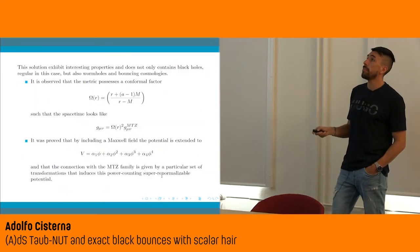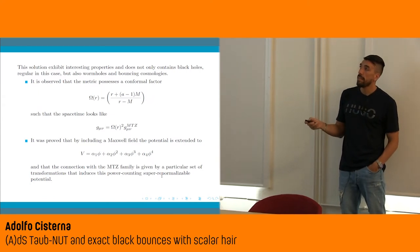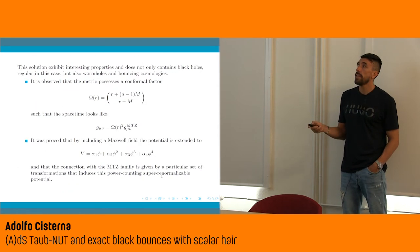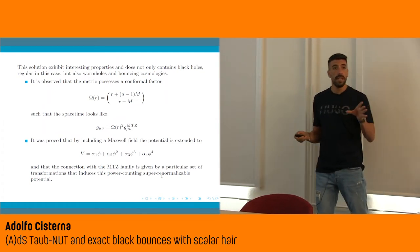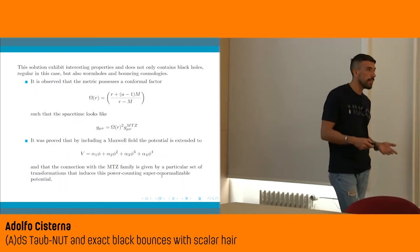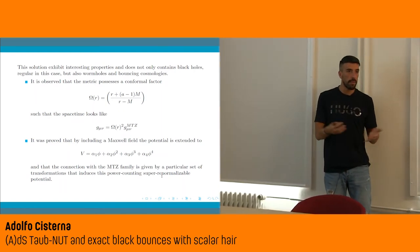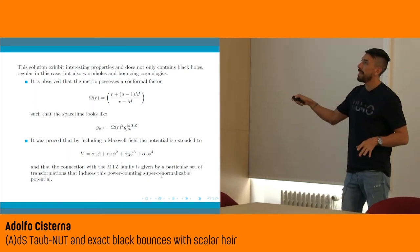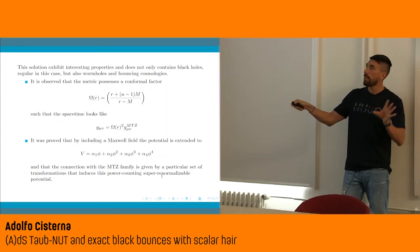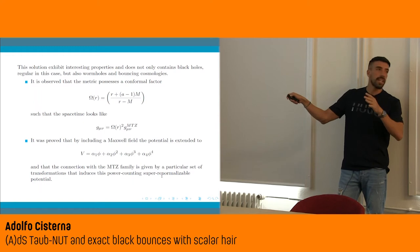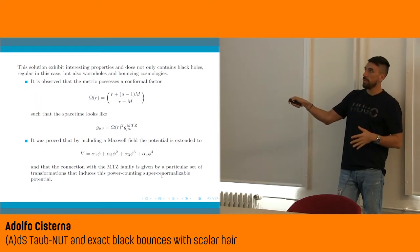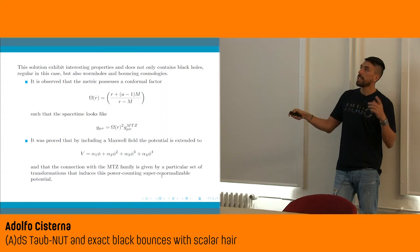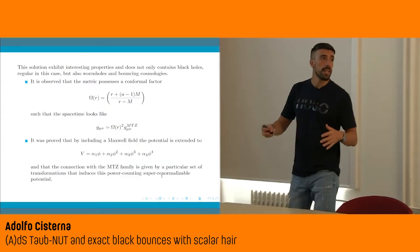It was then observed that actually the MTZ family and the metric of our new solution are easily related by a conformal transformation and a shift of the original scalar field. So there was no need to integrate the field equations from scratch — they are connected by simply taking the MTZ metric, multiplying it by a particular conformal factor, and shifting the scalar field.